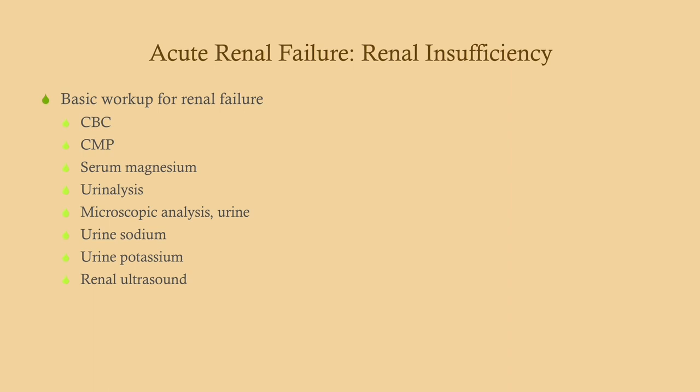Here is the basic workup for renal failure. Get a CBC — some renal diseases are associated with infection, and some are allergic, which would show elevated eosinophils. There can be thrombocytopenia, elevated white count, or anemia from blood loss (for example, with bladder cancer). Get a CMP rather than a BMP, because on Step 3 CCS the CMP includes serum calcium and liver function tests. Order serum magnesium separately, as it is not included in the CMP on Step 3 CCS.